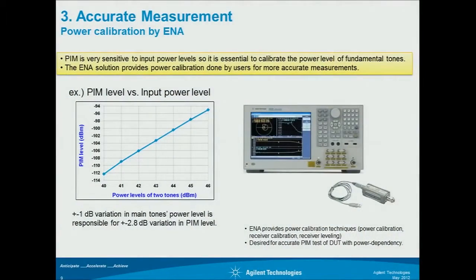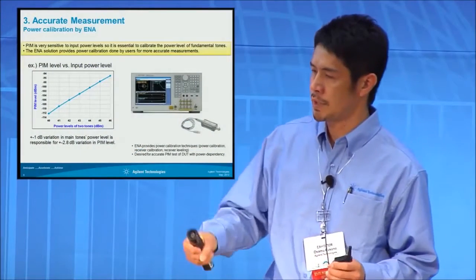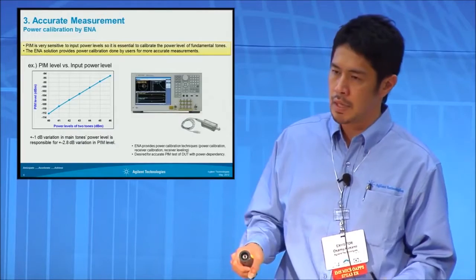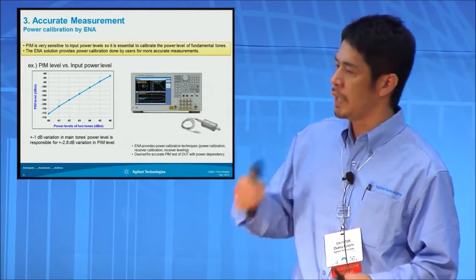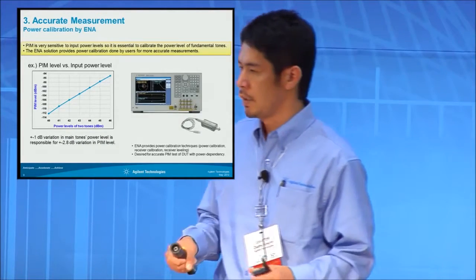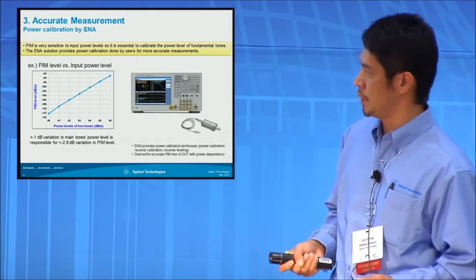More accurate measurement: because the network analyzer supports user calibration, and by using a power sensor, we can have user calibration of the whole configuration. So users can perform daily calibration of the system for better measurement accuracy.